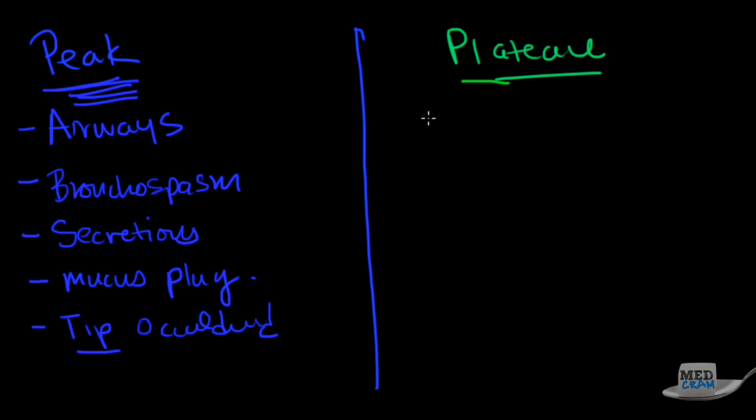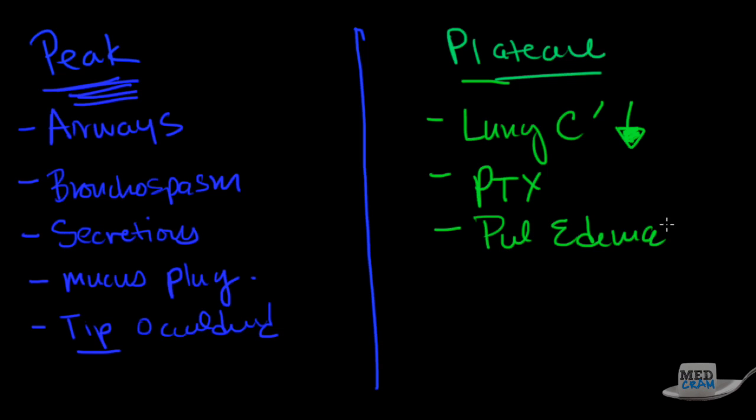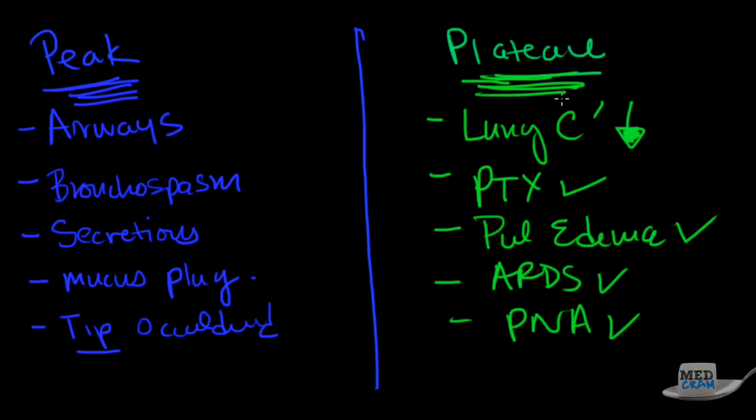These are all things that could cause peak airway pressure alarms in a patient with AC mode ventilation. What about plateau pressure? Remember, this has to do with the lung compliance. What are some things that would drop lung compliance? Pneumothorax could drop lung compliance. Pulmonary edema. That could do it pretty quickly. ARDS. Pneumonia. Now, ARDS and pneumonia are things that happen more chronically. You could have flash pulmonary edema. Obviously, a pneumothorax would happen rather quickly as well. So knowing the difference between plateau pressure and peak pressure could actually be very diagnostically helpful in a patient who is acutely decompensating. So you should know it.